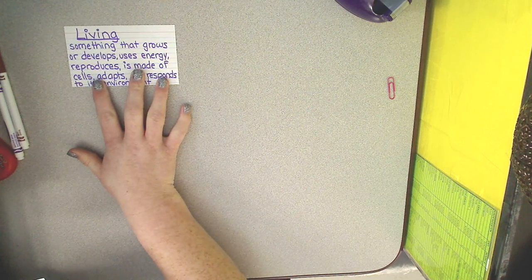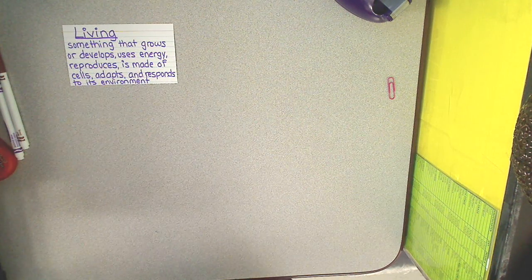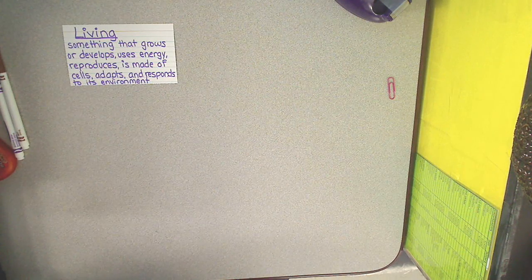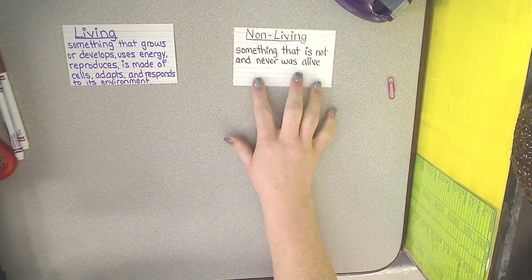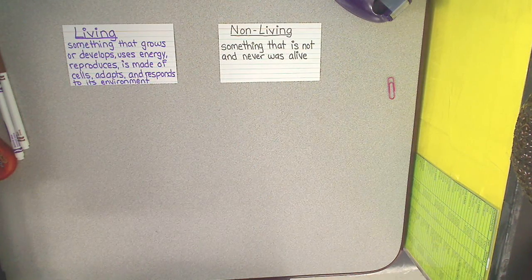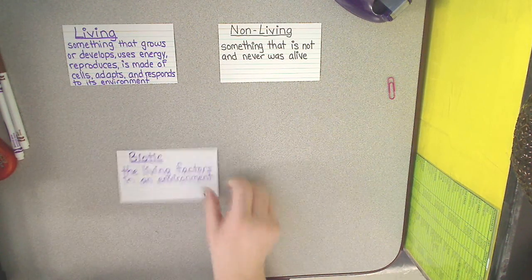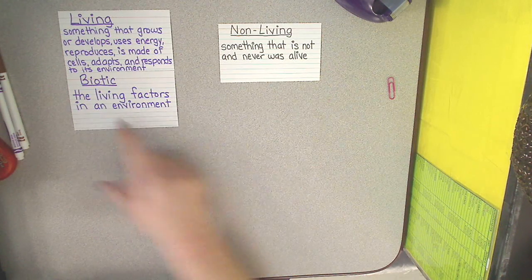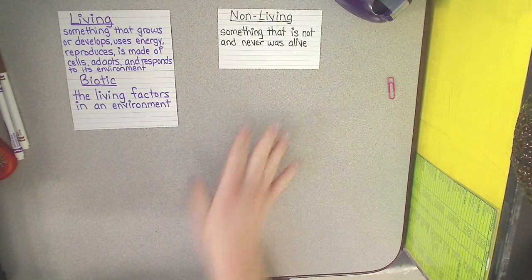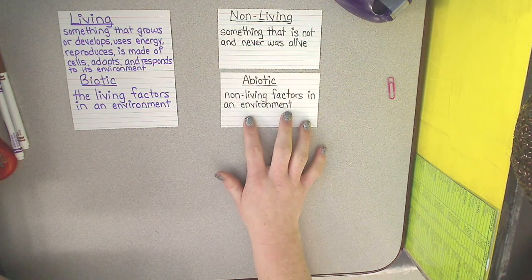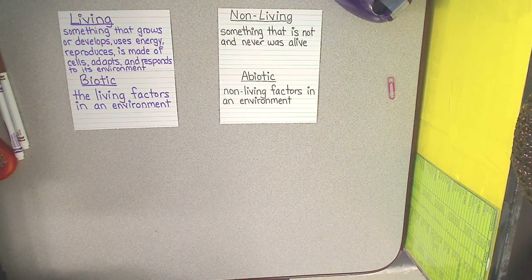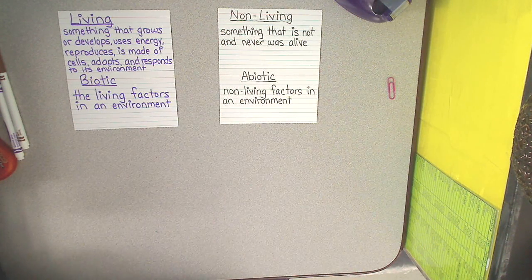Living things are something that grows or develops, uses energy, reproduces, is made of cells, adapts and responds to its environment. Non-living things are something that is not and never was alive. You might also hear the term biotic, which is another way of saying something that is living — the living factors in an environment. The antonym of biotic is abiotic, which refers to non-living factors in an environment. Pause this video and make sure you've taken these definitions down before you continue.